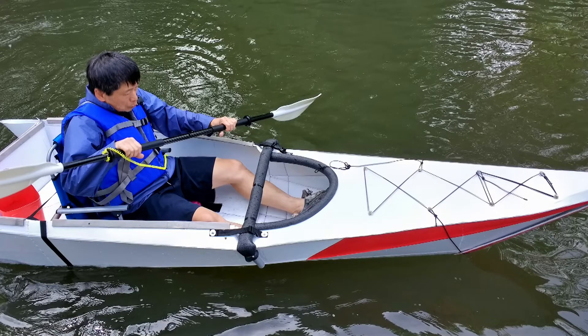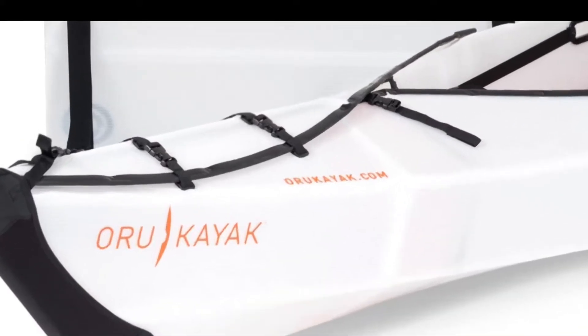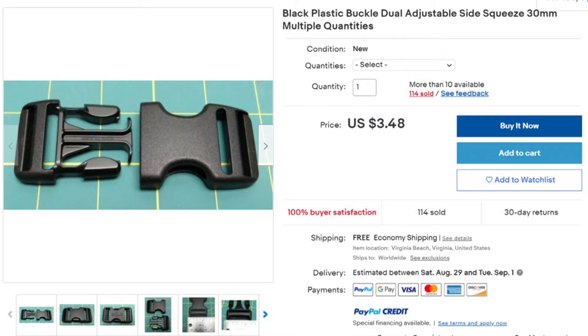In my Gen 3 design, I used the bungee cord and j-hooks to pull the top of the kayak together. The idea is similar to those products using plastic buckles.